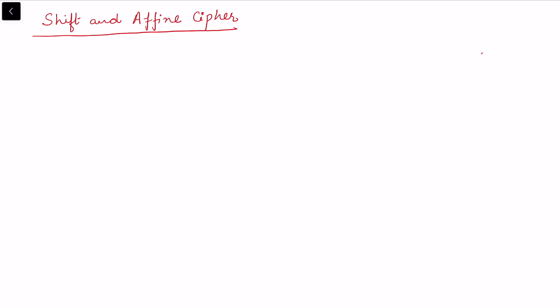This is my second video on shift and affine cipher. As explained in the last video, the link is added in the description. These are techniques of classical cryptography where we want to hide the information, and in particular these are substitution ciphers — cases where an alphabet is substituted for some other alphabet.